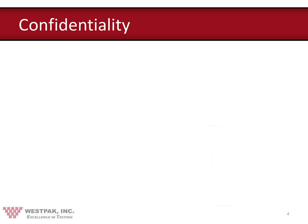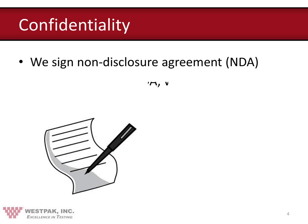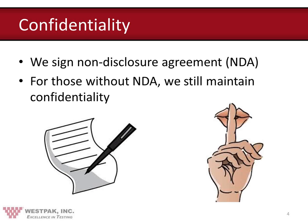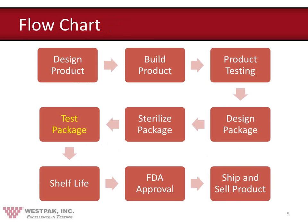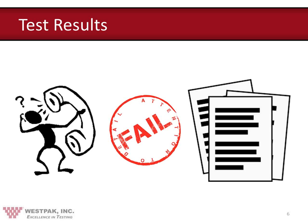Before we begin, we want to talk about confidentiality. We sign non-disclosure agreements (NDAs), and for customers we don't sign with, we still maintain confidentiality. This is a generic flowchart of the events our customers encounter in order to launch their products. We want to indicate where a testing laboratory fits in the flowchart. When you send your packages to a testing laboratory and get a call or email saying the package failed, wasn't able to sustain, or had gross leaks — we'll explain what all those terms mean in the next few slides.